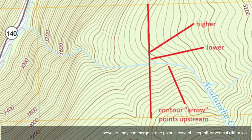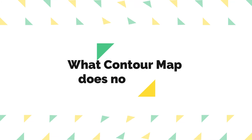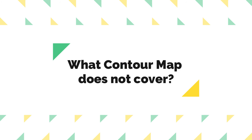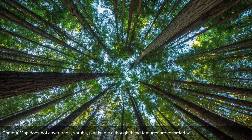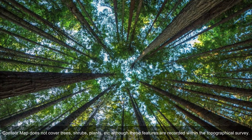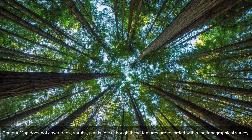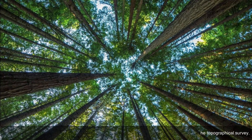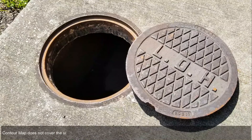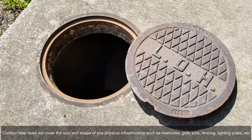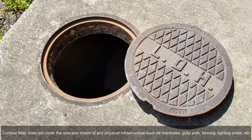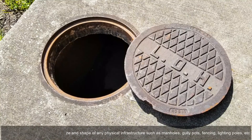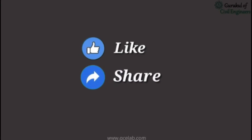Contour maps do not cover trees, shrubs, or plants, although these features are recorded within a topographical survey. Contour maps also do not cover the size and shape of any physical infrastructure such as manholes, pools, gully pots, fencing, or lighting poles.